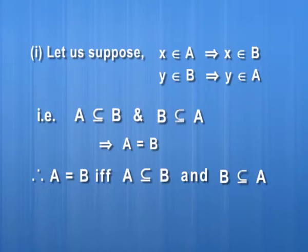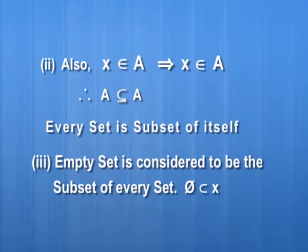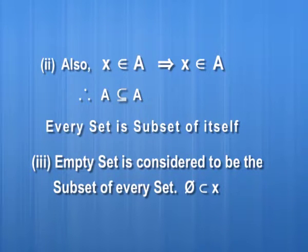The definition of equality can be stated as: two sets A and B are said to be equal if and only if A is contained in B and B is contained in A. Also, since any element x belonging to A implies x belongs to A, the set A is a subset of itself. So we can conclude that every set A is a subset of itself. The empty set is a subset of each set.